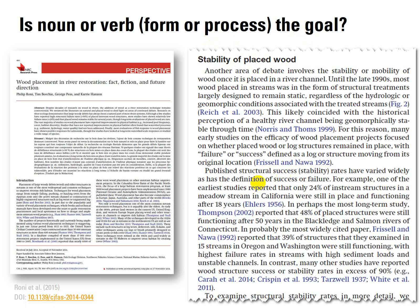The expectation management around wood mobility is something the science has highlighted, but on the restoration side there's still a problem — many early studies on the efficacy of wood placement projects focused on whether placed wood or log structures remained in place, with failure or success defined as a log or structure moving. That's not rooted in a process-based understanding of what wood does. It's rooted in an engineering-based design mindset, which is useful for many design problems but maybe not the best approach for a dynamic system like this.